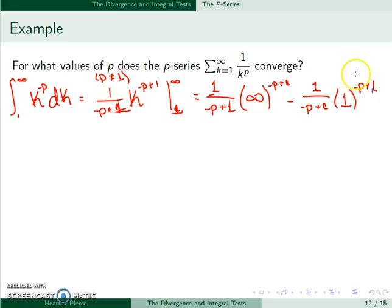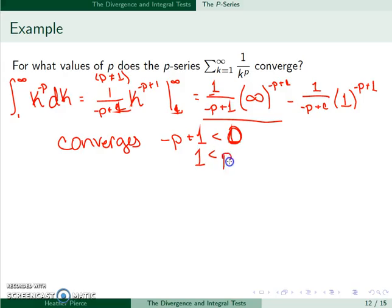So in general, we want to know when this converges. And so this is the main term we're going to look at. And in particular, infinity to a power doesn't converge unless it's on the bottom of a fraction. So this converges when negative p plus 1 is smaller than 0. So 1 has to be smaller than p. So as long as p is greater than 1, this thing converges.